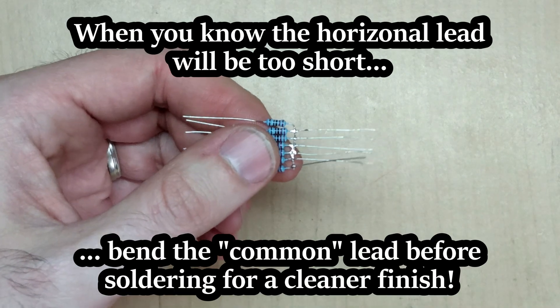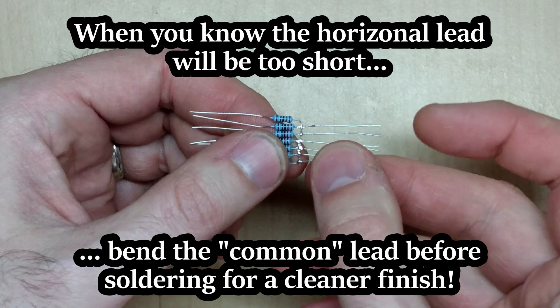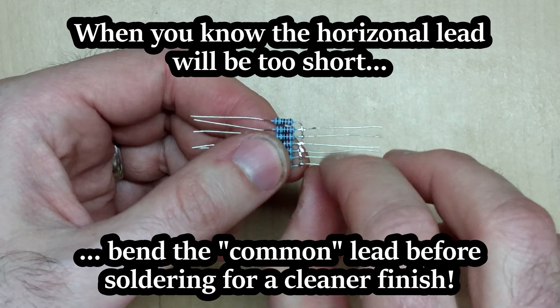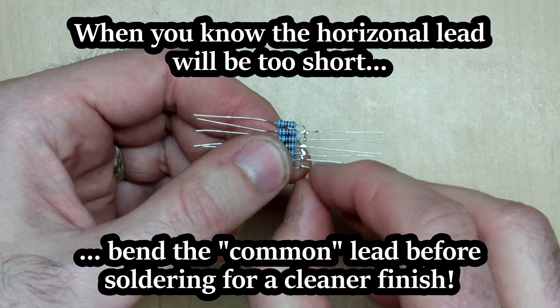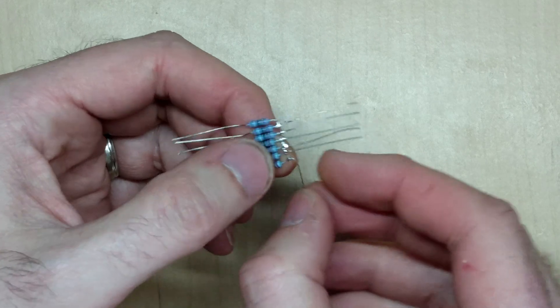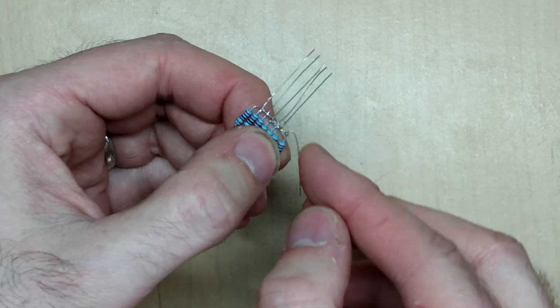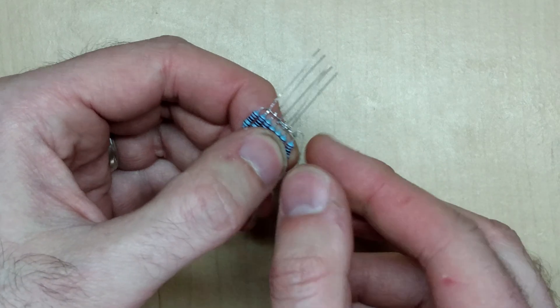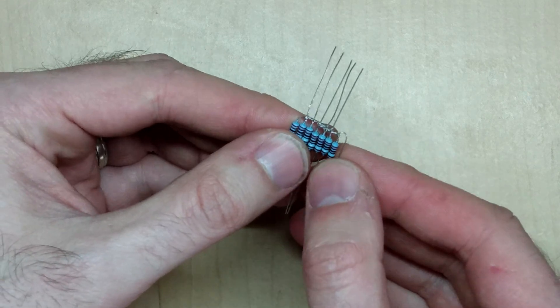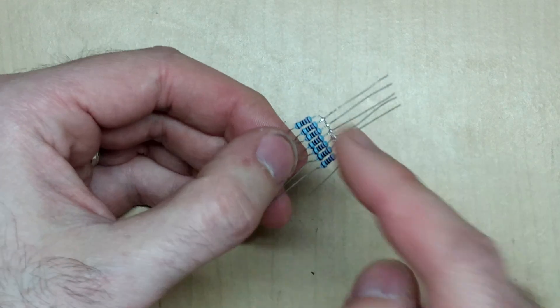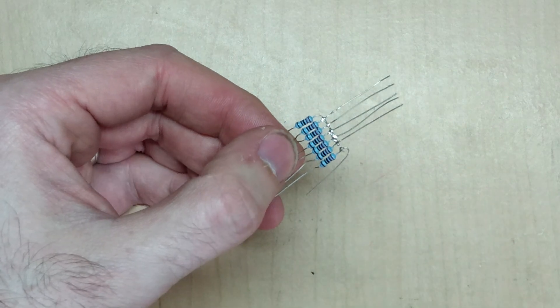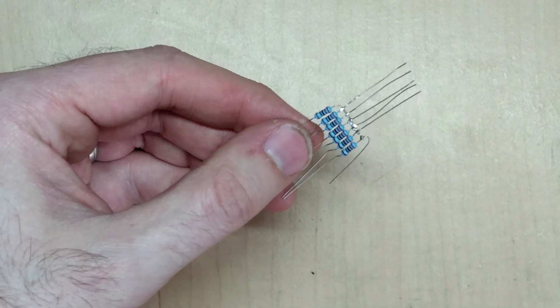And then I'm going to take this final lead and bend it so that it becomes my new common lead. It's going to hang off the side of the resistor network, just like that. I'm going to continue to trim off these leads and then I'll have a finished component.